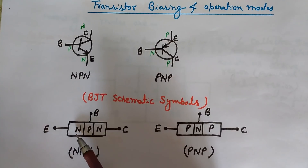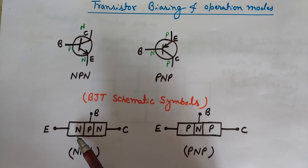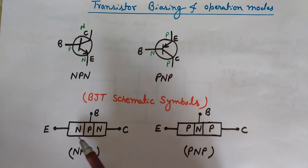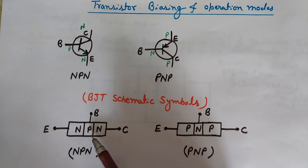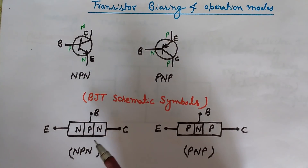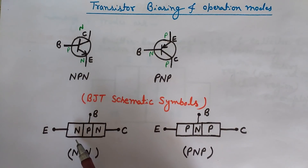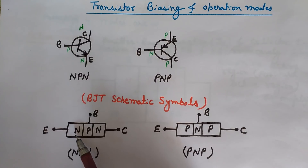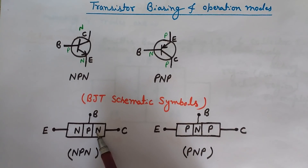For transistor action, we want the electrons emitted from the emitter to reach the collector through the base. In NPN, a large number of electrons are emitted from the emitter, they pass through the base and reach the collector region. We want maximum electrons to reach the collector. In PNP, this action happens with holes. For maximum electrons to travel from emitter to collector, the doping of the emitter region is highest.